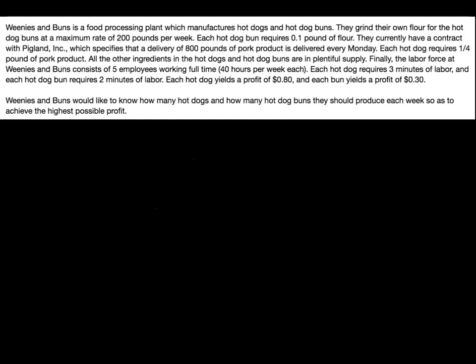We're looking for any kind of restriction on something in the problem. Notice first of all we have the word "maximum" here — flour is ground at a maximum rate of 200 pounds per week. So flour has to stay less than or equal to 200. Then we have pork — 800 pounds of pork delivered every Monday, so there might be some sort of restriction there. Other supplies or ingredients are in plentiful supply, so there are no other restrictions on things like water or salt.